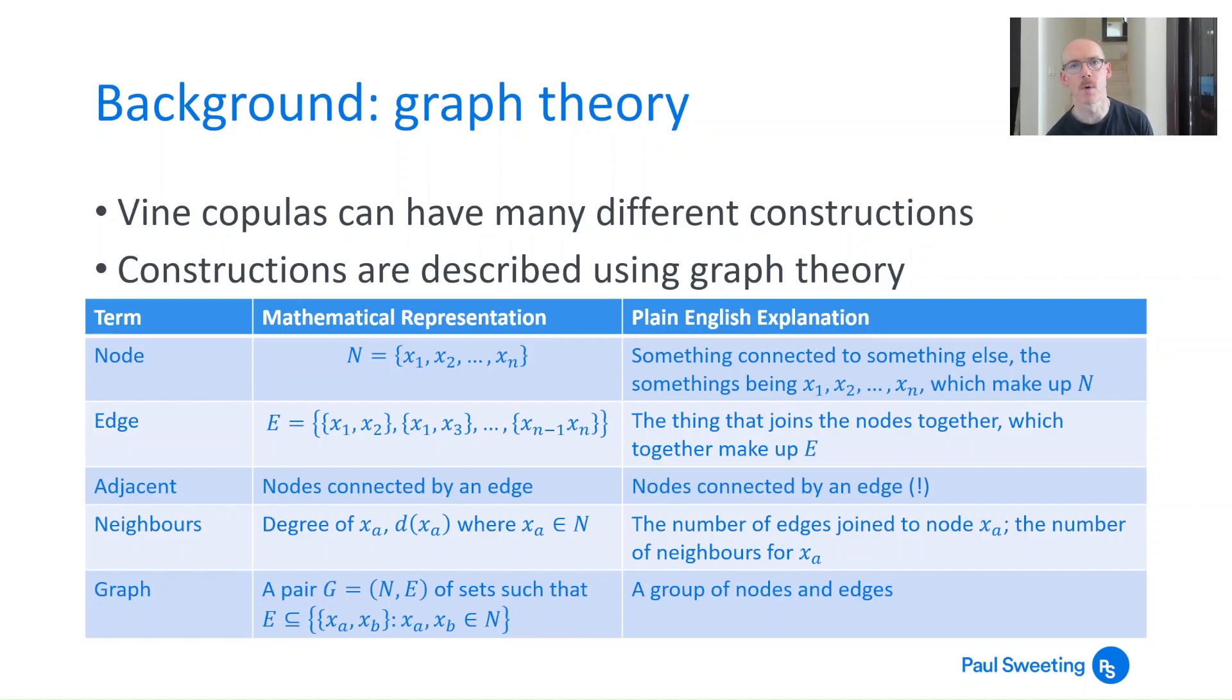When we're looking at vine copulas it's quite helpful to think about it in terms of something called graph theory. Vine copulas can have a lot of different constructions and graph theory gives us a vocabulary that we can use to describe these constructions more accurately. Maths is very good at accurate representations, not necessarily the most obvious to non-mathematicians. So what I've done here is I've looked at some of the terms that get used, shown how they're represented mathematically, and then given a plain English explanation next to them.